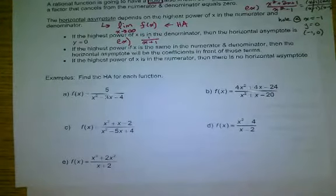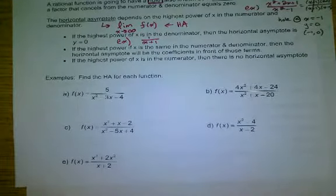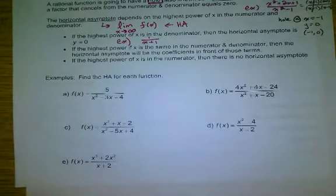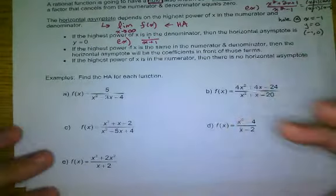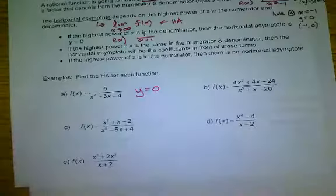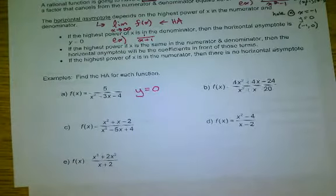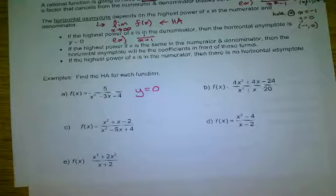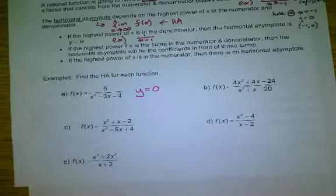Let's look at letter A. What is the highest power? It's x squared, and where is it? On the bottom. So the horizontal asymptote is y equals 0. That was actually the easy part — glad we're good.